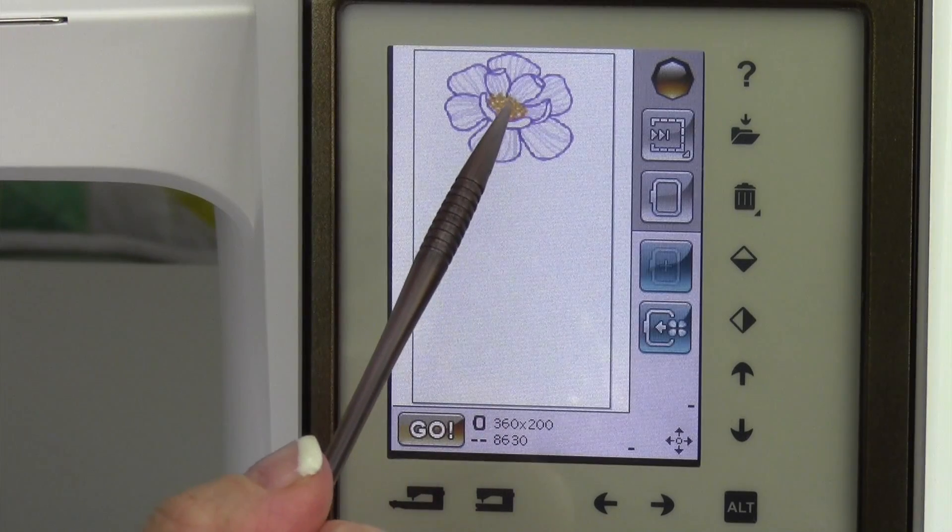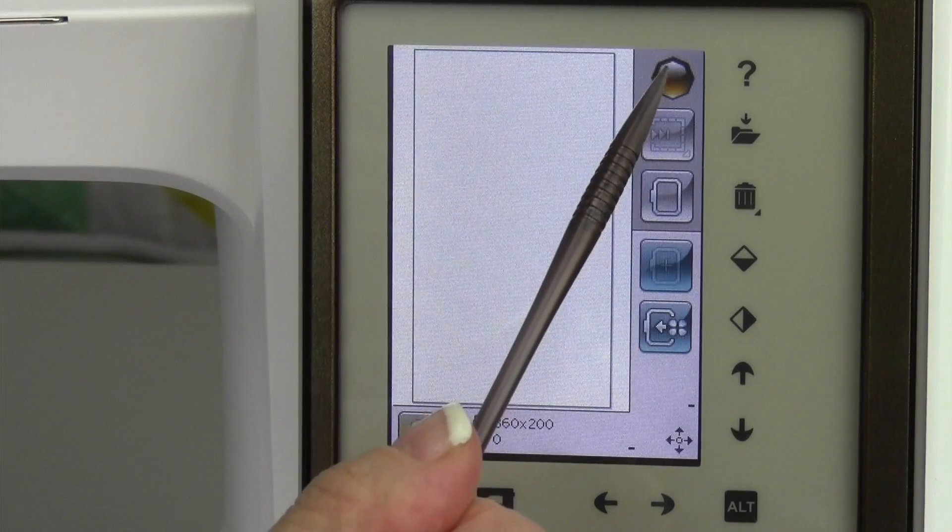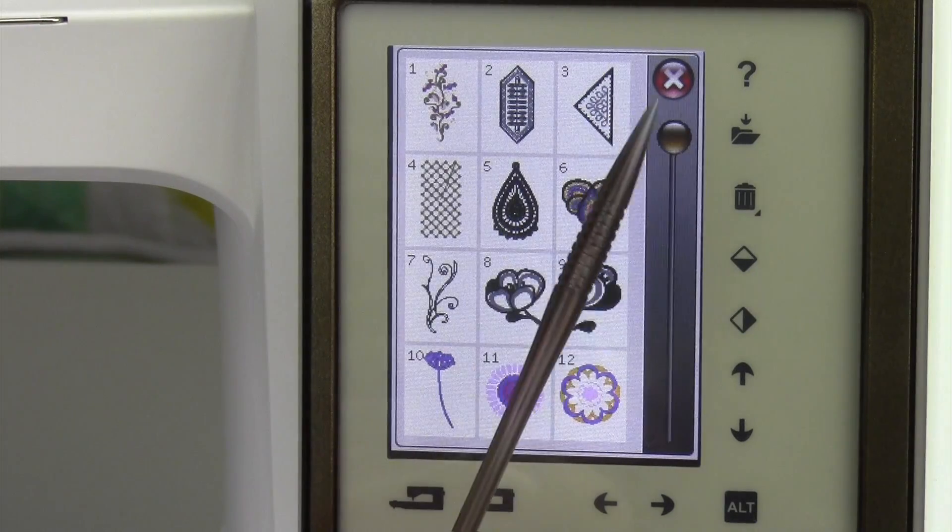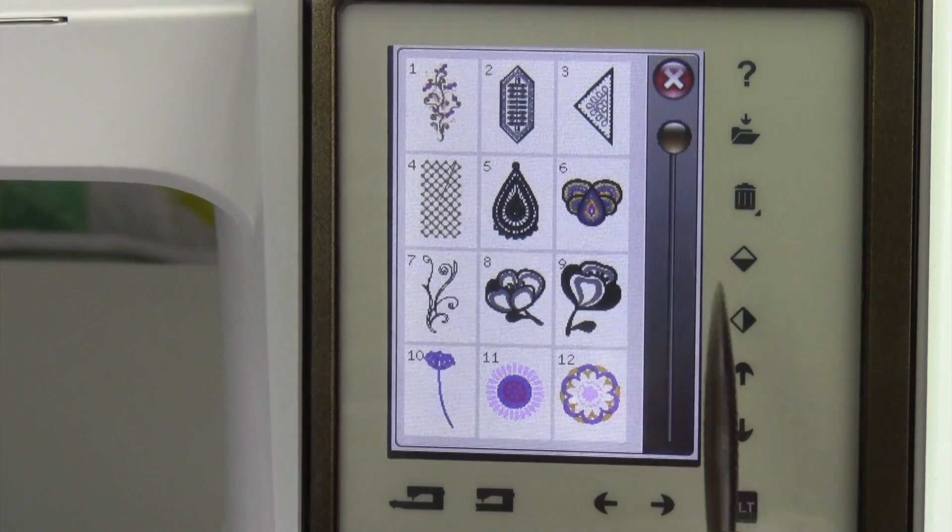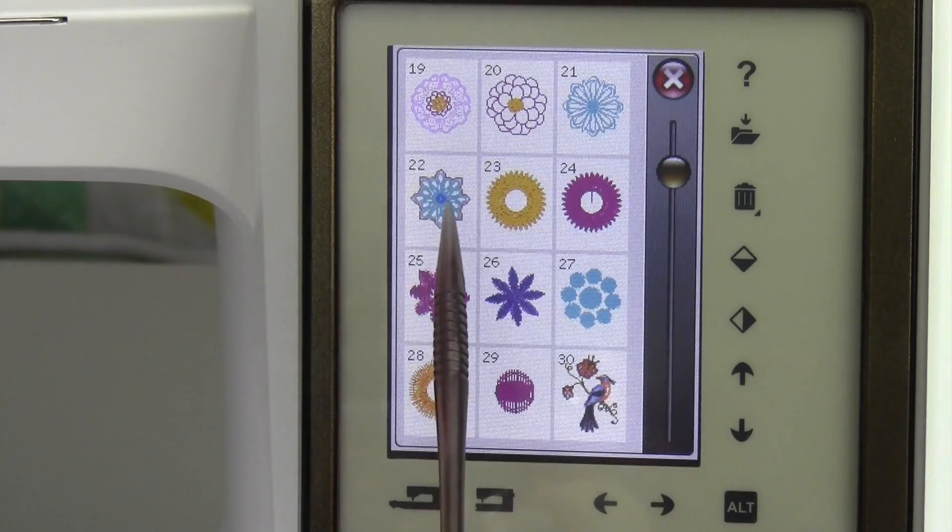We just finished embroidering this little flower, so when I'm done, we can touch the flower and touch the trash can. Go up to the start menu and click the built-in designs, and we're just going to go ahead and use design number 22. When we bring it up on screen, you're going to see what we're going to start to play with.